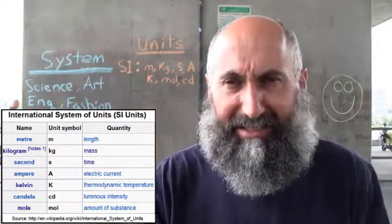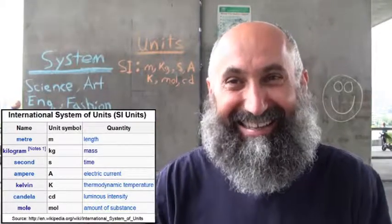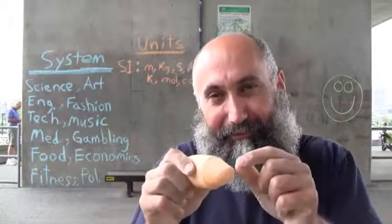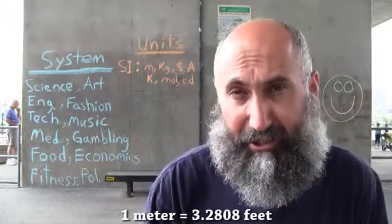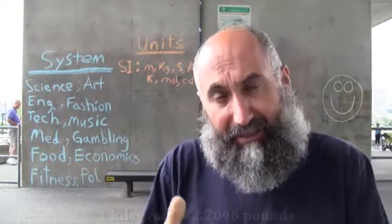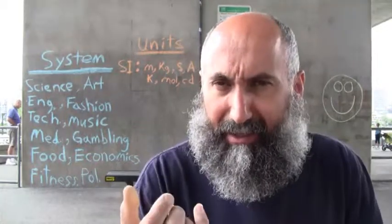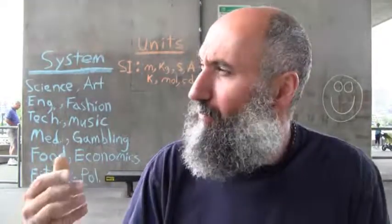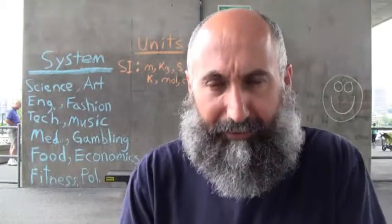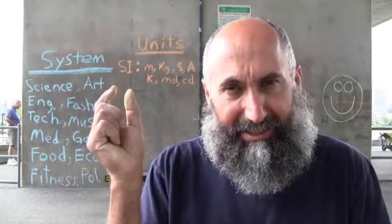The seven SI base units are meters, kilograms, seconds, amperes, kelvin, moles, and candela. Meters represent length — how long things are, what their dimensions are. Internationally we use meters, but there's also the imperial system which uses feet, inches, and miles. For weight, kilograms are the SI unit, but outside the United States, Liberia, and Burma — even in Canada — very few people tell you their weight in kilograms; they use pounds.